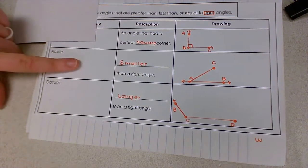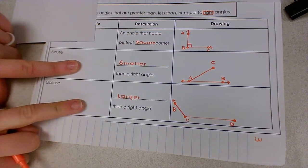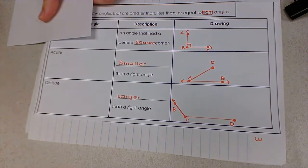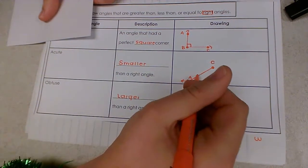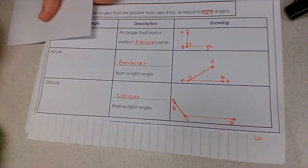Because both my acute and obtuse angle don't have a perfect square corner, we label the space on the inside of this angle a little differently.